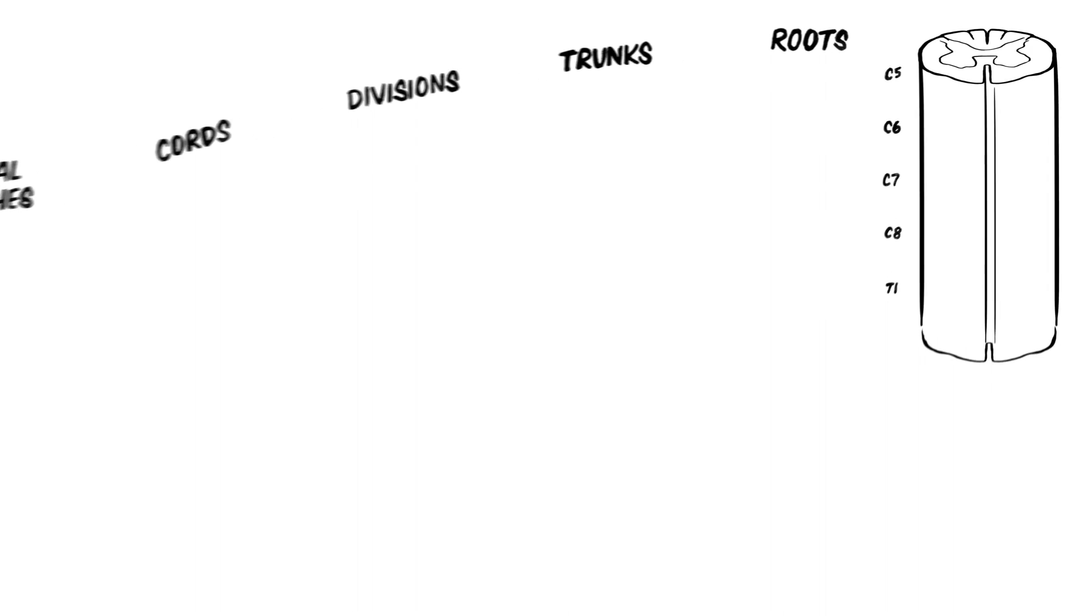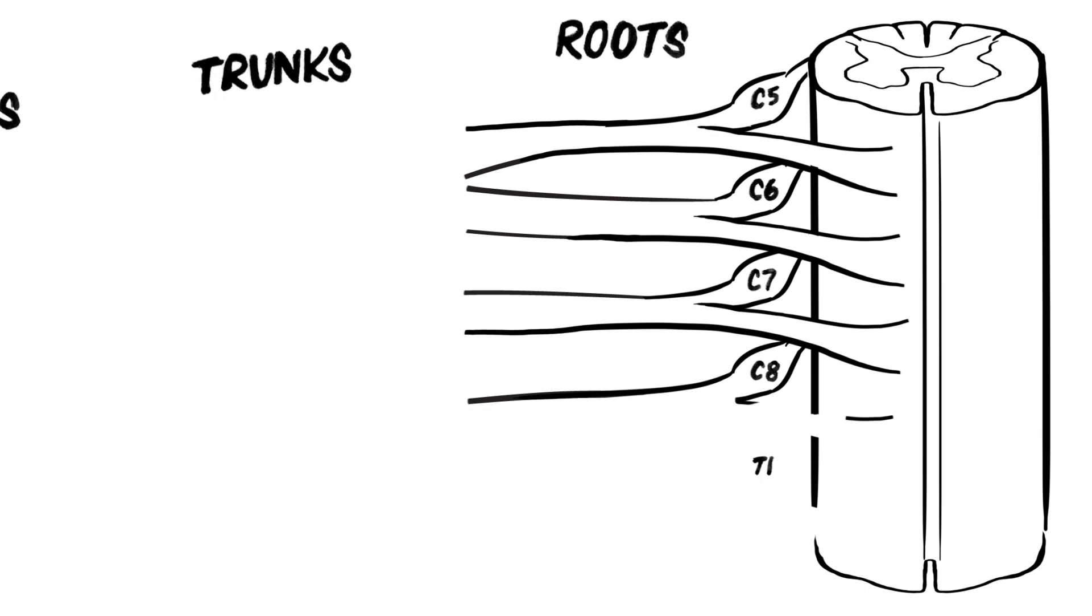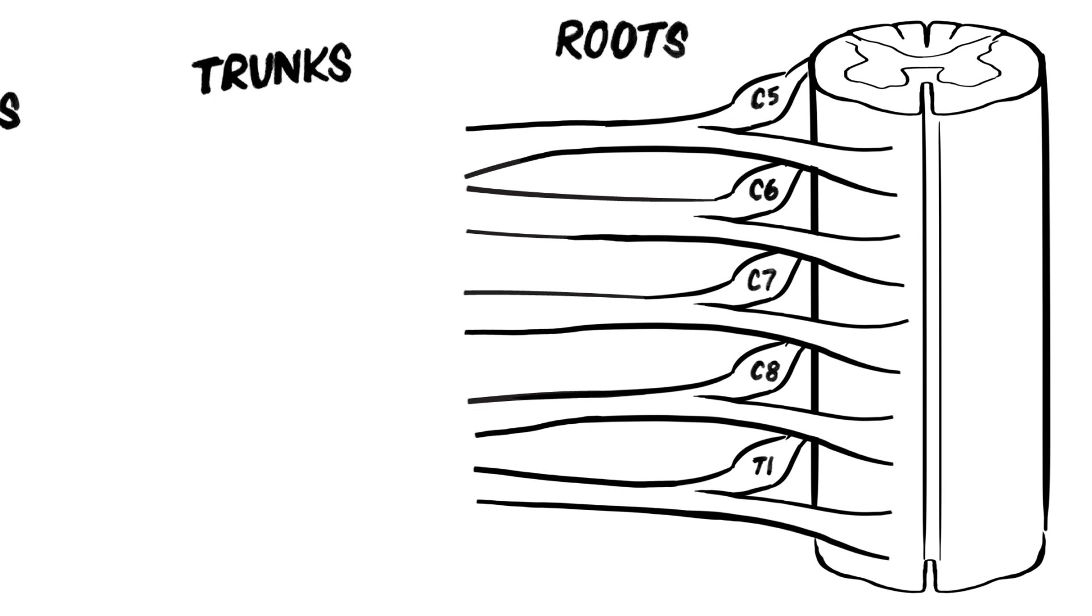Let's look at how these different parts of the brachial plexus are formed. Ventral rami from C5 to T1 form the roots. There is one root from each spinal segment, and they are named according to the spinal segment they represent, for example, the C5 root.